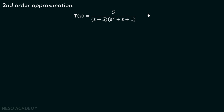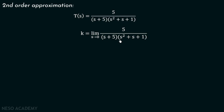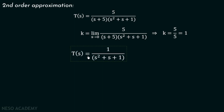Condition number two is that the DC gain before approximation and the DC gain after approximation should be the same. This is a type 0 system because there is no pole at s = 0, so the DC gain is K = lim(s→0) of 5 / [(s + 5)(s² + s + 1)] = 5/5 = 1. The DC gain of this transfer function is equal to 1. So after eliminating the insignificant pole, the DC gain must remain 1.